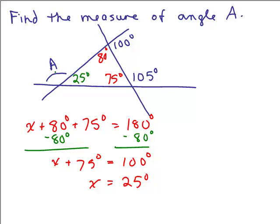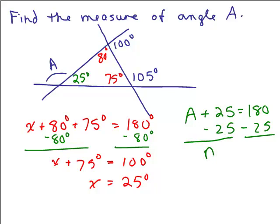Now we know what A plus that 25 has to add up to 180 as well. So A plus 25, and I'm going to leave off the degree symbol on this one and in the end remember to write our answer in degrees. So we're going to have to subtract 25 from both sides. So A is 155 degrees.